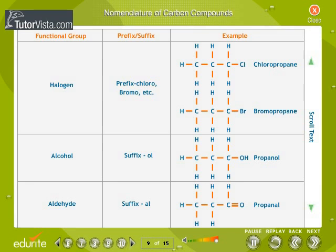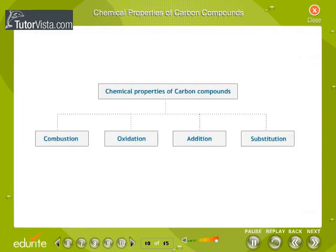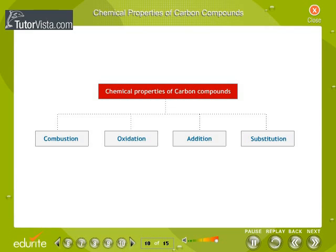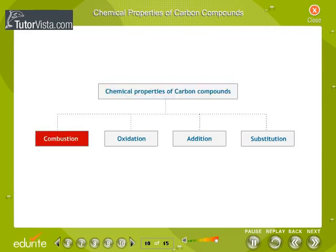Nomenclature of carbon compounds. The names of compounds in a homologous series are based on the name of the basic carbon chain, modified by a prefix or suffix indicating the nature of the functional group. The four important chemical reactions of carbon are combustion, oxidation, addition, and substitution.